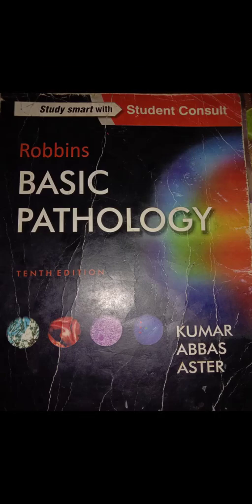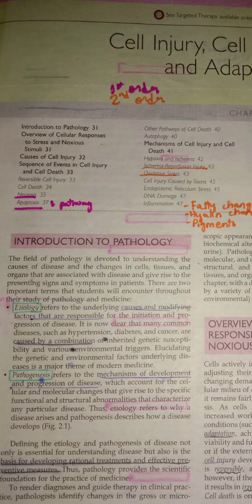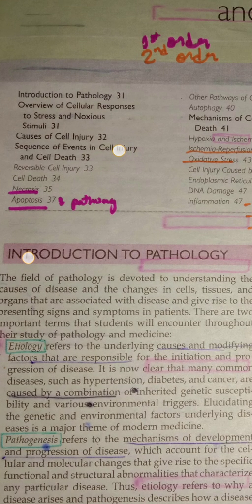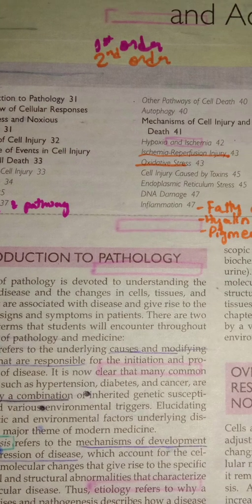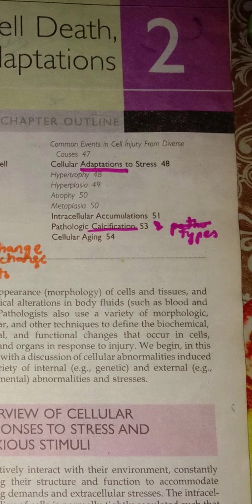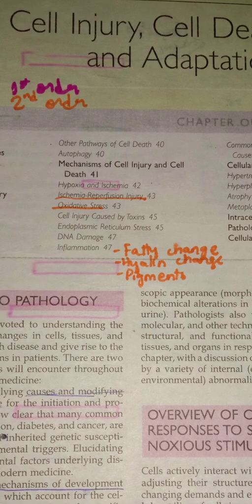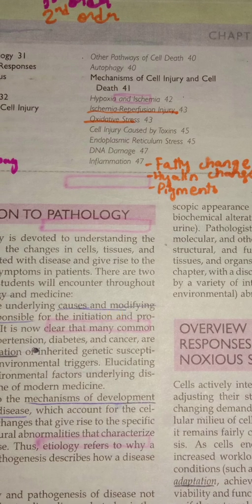Bismillahirrahmanirrahim. We are studying basic pathology or general pathology. We start with cell injury, which has first order and second order topics. First order topics are necrosis and apoptosis, which we will study today. The topic of adaptations and calcifications will be studied the day after. These are topics repeated in exams. Second order topics, which may appear as MCQs or rarely as SAQs, include mechanisms of cell injury, to be studied tomorrow.